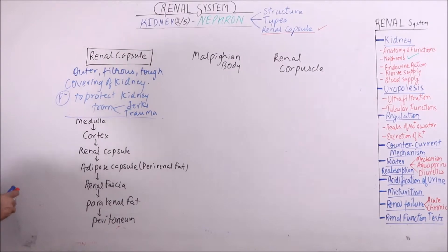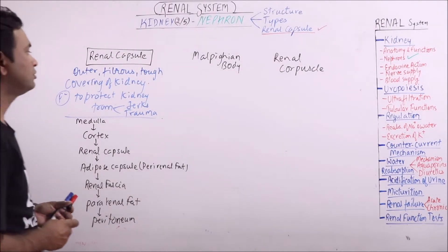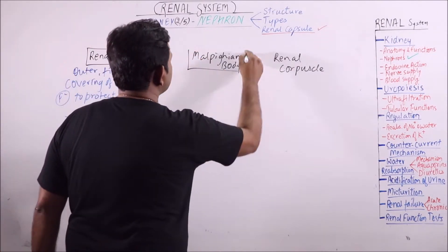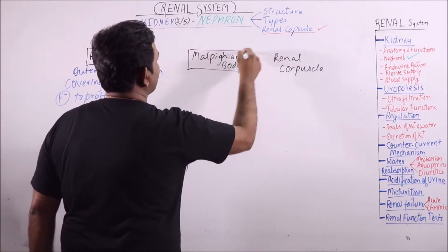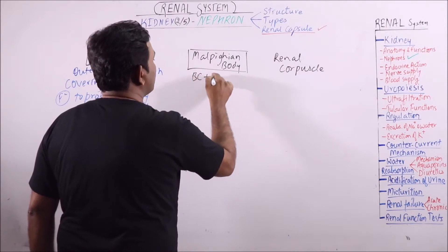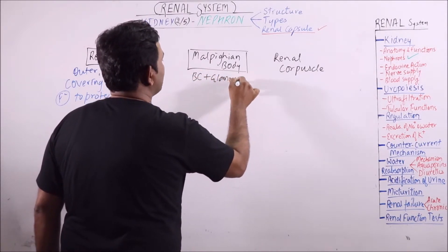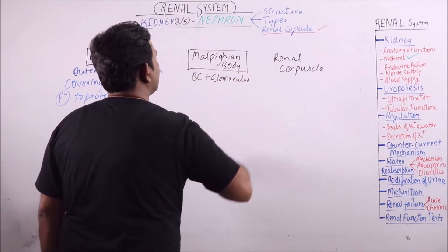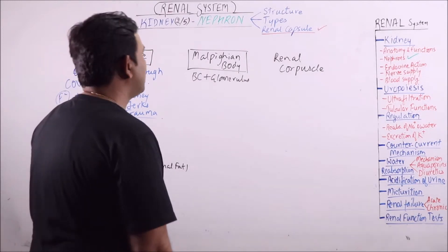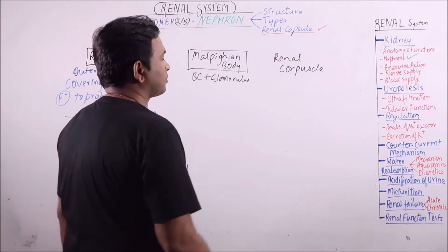So this is the renal capsule. Another term is Malpighian body. Bowman's capsule plus glomerulus are collectively termed as Malpighian body.